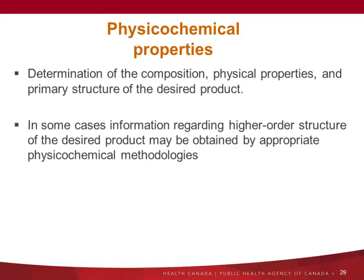In terms of physical chemical properties, it consists of the determination of the composition, physical properties, and primary structure of the desired product. In some cases, information regarding higher order structure of the desired product may be obtained by appropriate physical chemical methodologies. This slide is the same as the one presented before — just to say that in terms of biological activity, you may have different assays: cell/tissue-based bioassays, binding assays, or animal-based biological assays, all measuring different responses.